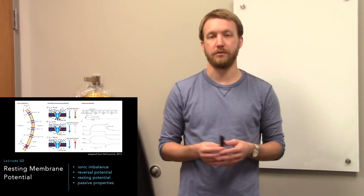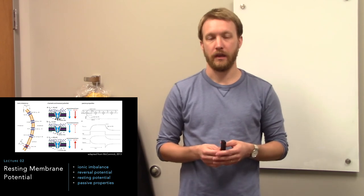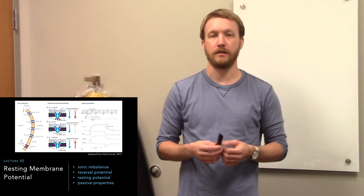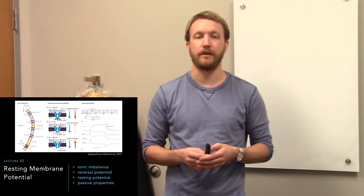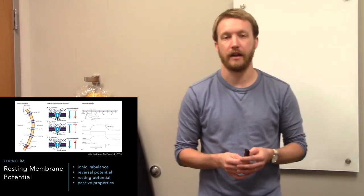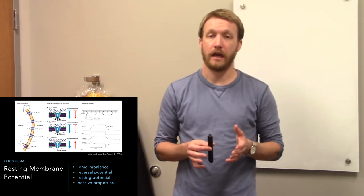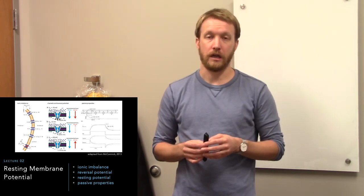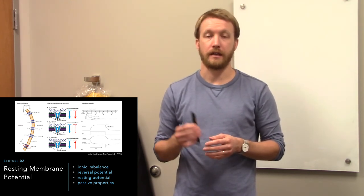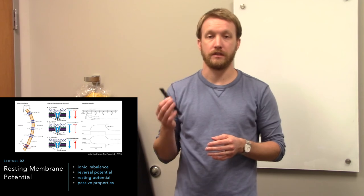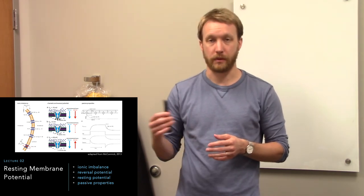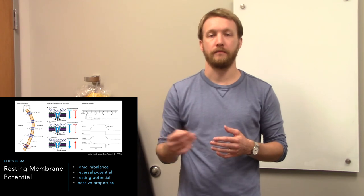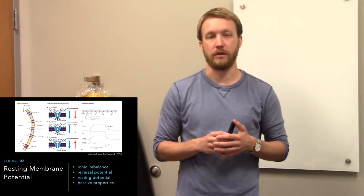Because neurons are always communicating, the resting membrane potential is more of an idea than a real thing that neurons take advantage of. But every neuron does have a membrane potential that it tends to gravitate toward. The activity that it receives in its dendrites, and propagates down its axon, pulls it away from that. That is the resting membrane potential.